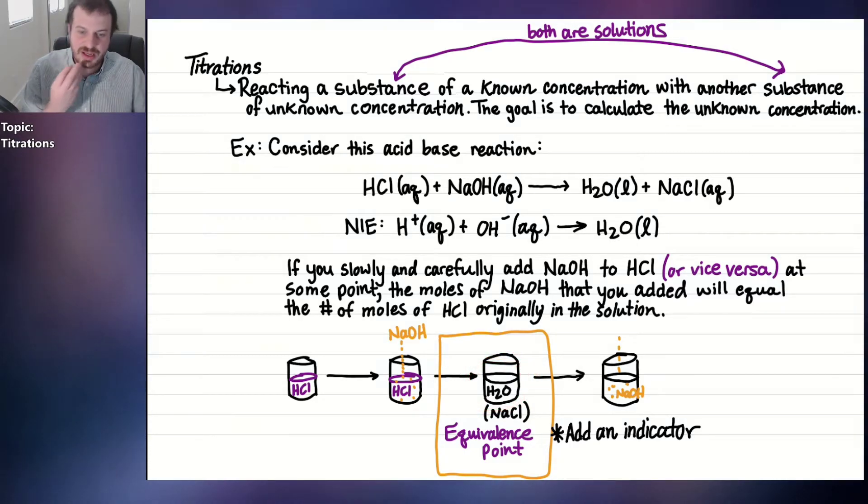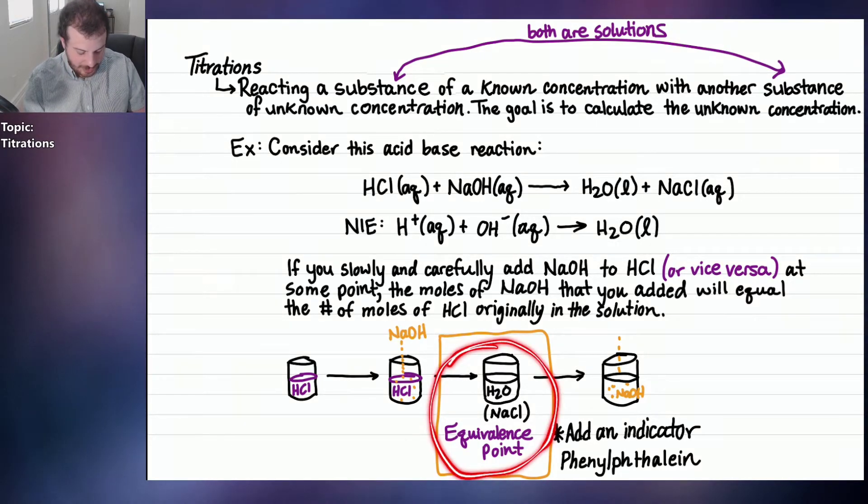And then you know you've reached the equivalence point. So the whole solution will turn a different color. Some indicators turn red, some turn pink, some turn blue. One of the most common indicators is phenolphthalein, and it changes pink right around the equivalence point for an acid-base titration. So you'll add NaOH drop by drop to the HCl until the indicator turns pink. And you know that you're, if not exactly, very close to the equivalence point. Let's take a look at how an example problem might look.